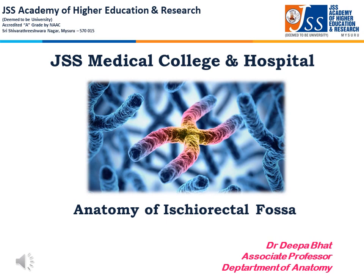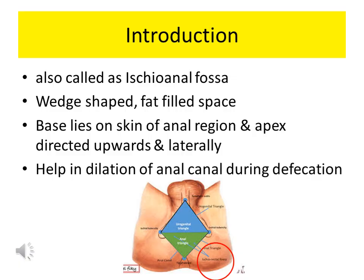Today let's study the anatomy of ischioanal fossa. It's also called ischioanal fossa. It's a wedge-shaped, fat-filled space present on either side of the anal orifice. The base lies on the skin of the anal region in the perineum, and the apex is directed upwards and laterally. It helps in dilation of the anal canal during defecation.